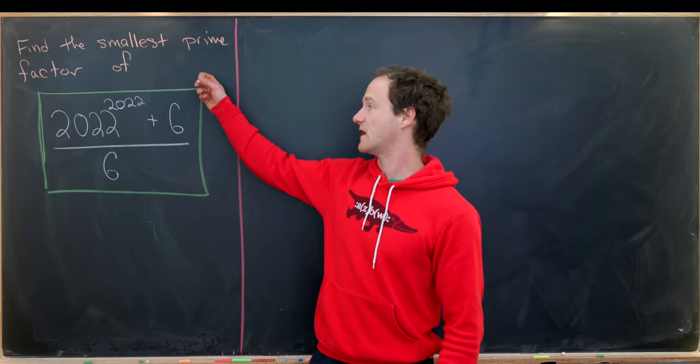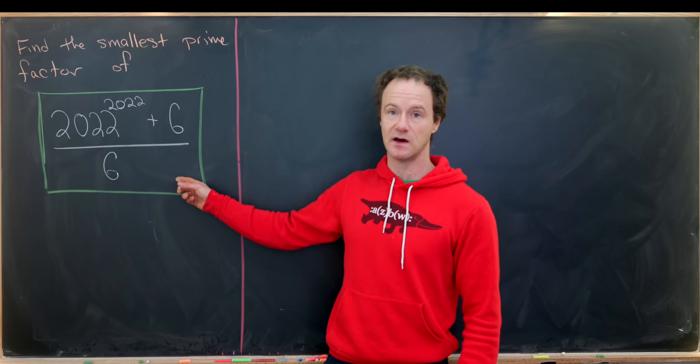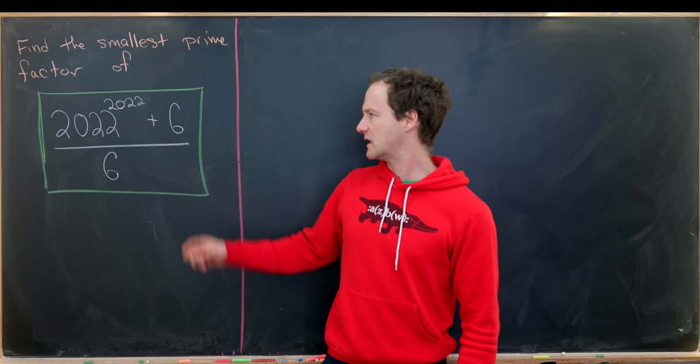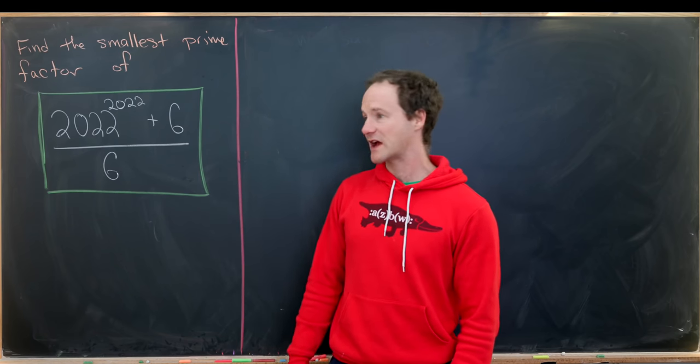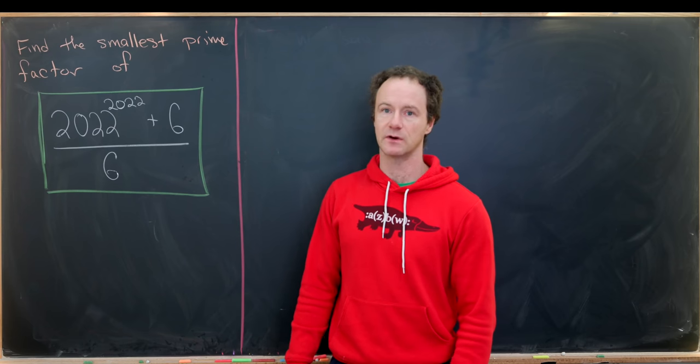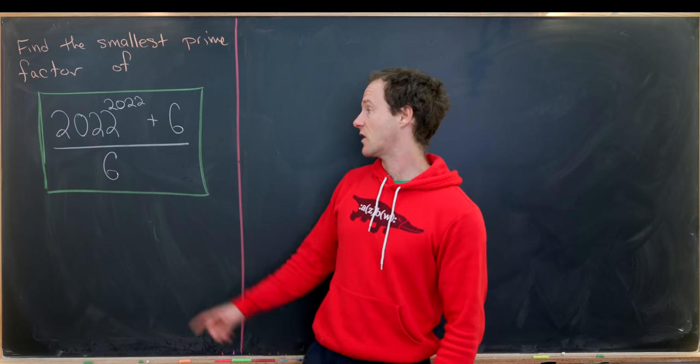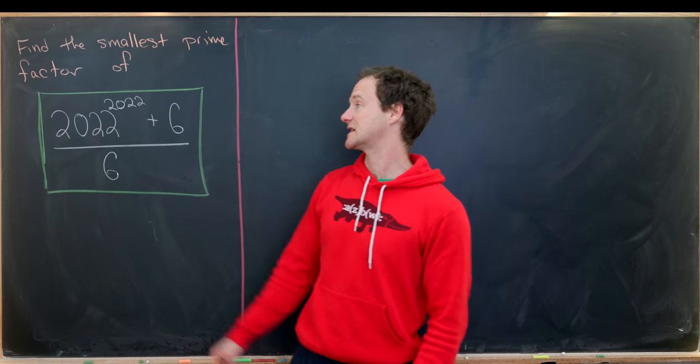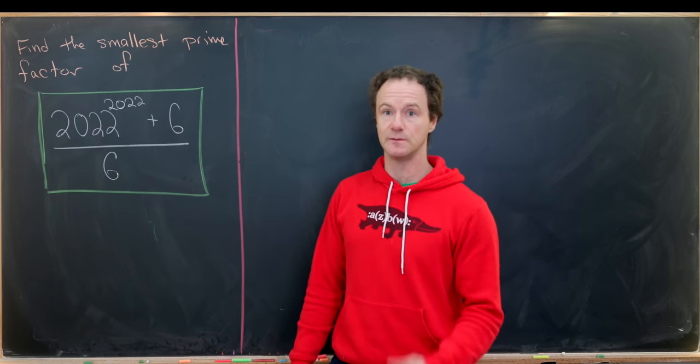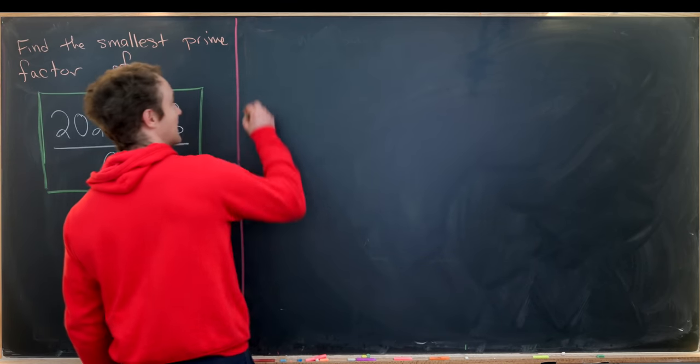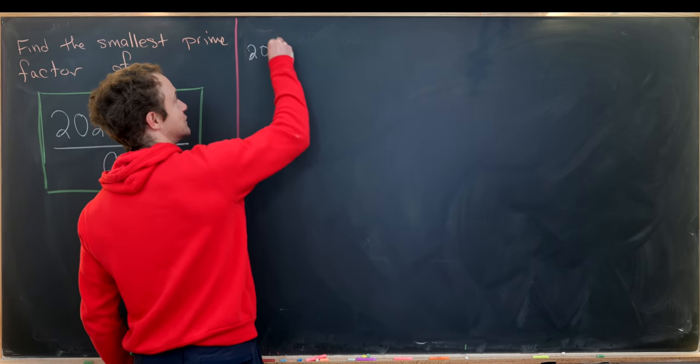So our goal is to find the smallest prime factor of this number. But looking at it, it looks like this number could be a rational number and a non-integral rational number. So we need to make sure that it's an integer in the first place. In other words, we need to be able to divide six out of this 2022. But indeed, we can do that, and that's by the factorization of 2022.